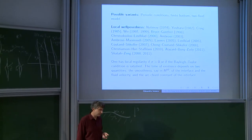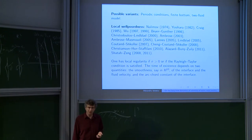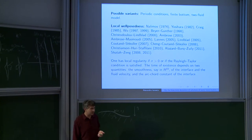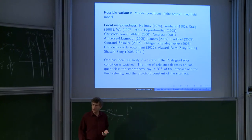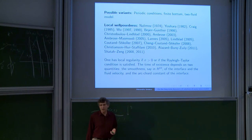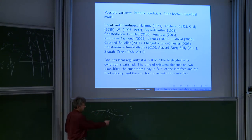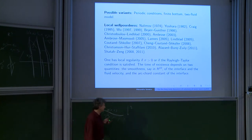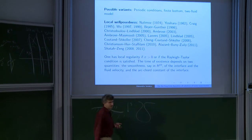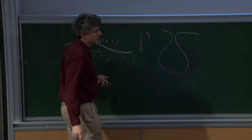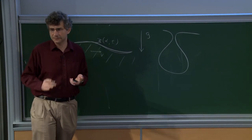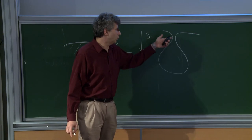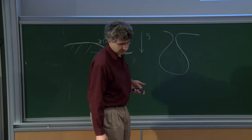Fabio also described these two days ago. The local regularity is well understood. The general picture is that one has local regularity, a well-posed system, if the surface tension is positive, or when it's equal to zero if a certain condition — the Rayleigh-Taylor condition — is satisfied. The time of existence depends on two natural features: the smoothness of the parameters, and the arc-chord constant of the interface, which captures how close the surface is to self-intersecting.